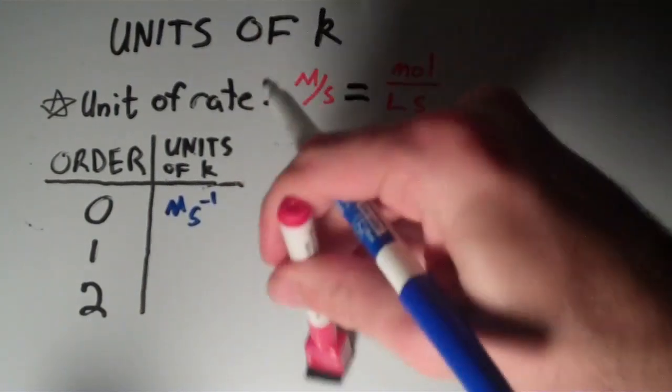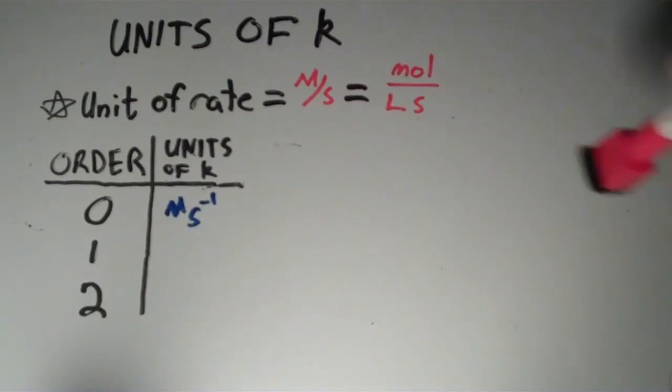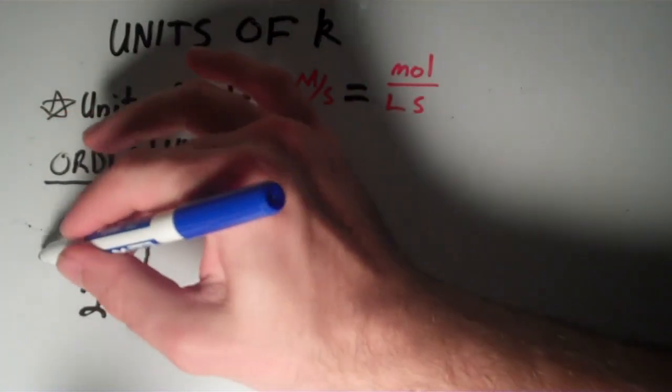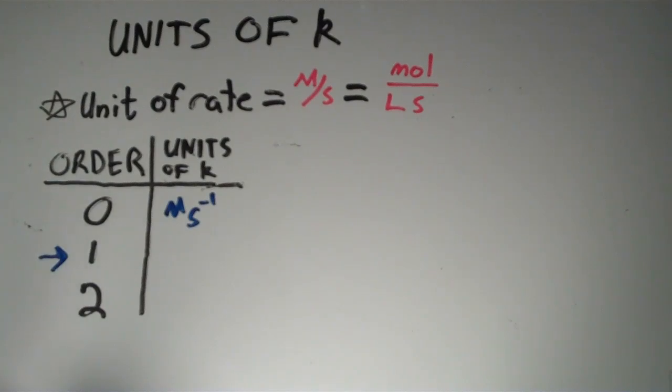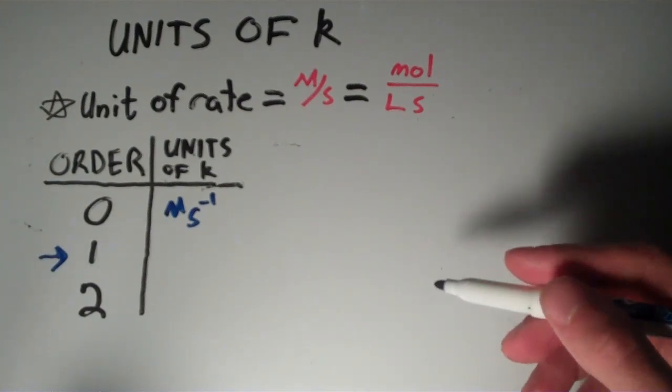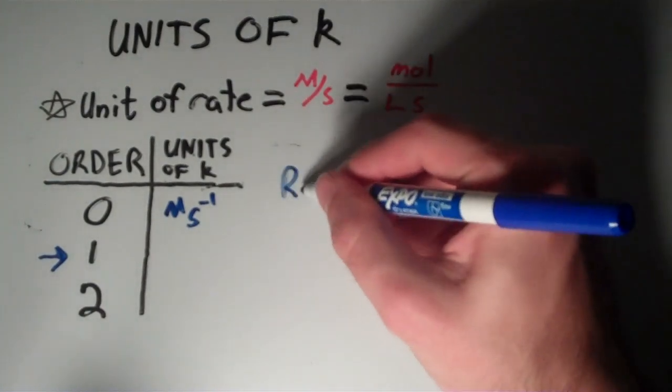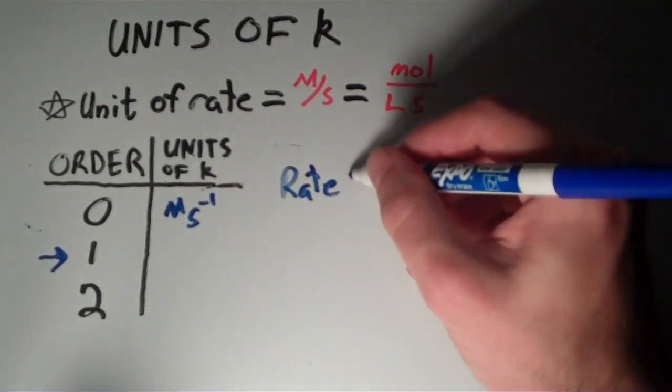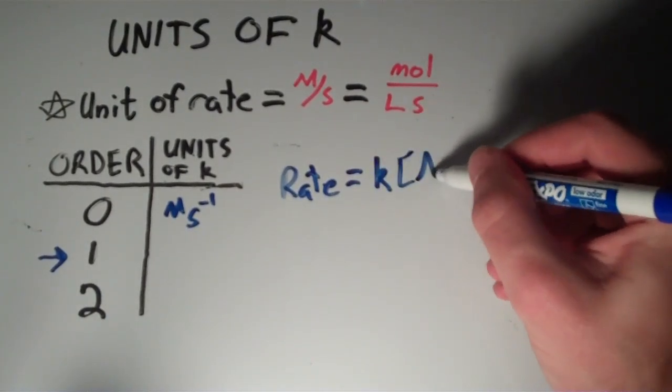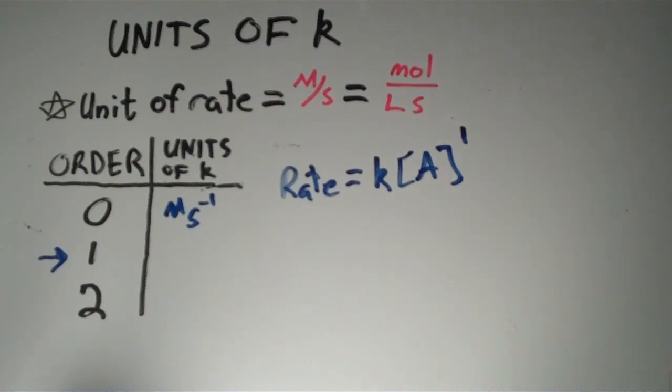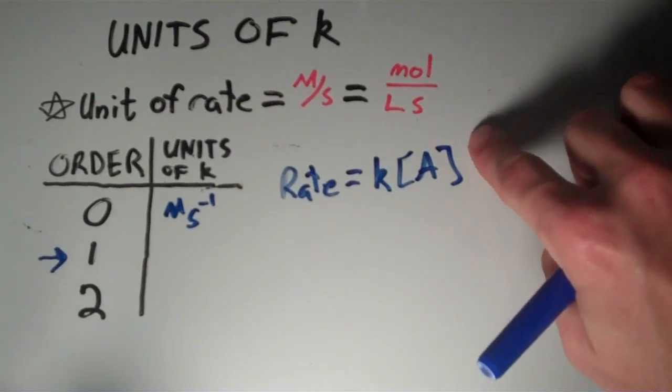Now let's turn our attention to a first-order reaction. If you recall, the rate law for a first-order reaction is rate equals K, the rate constant, times the concentration of A to the first power, or simply K times [A].